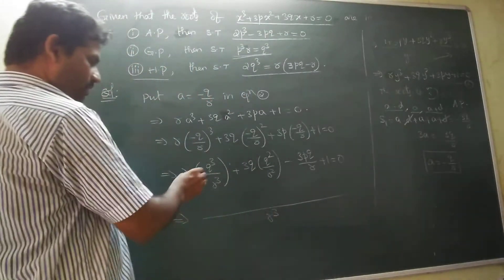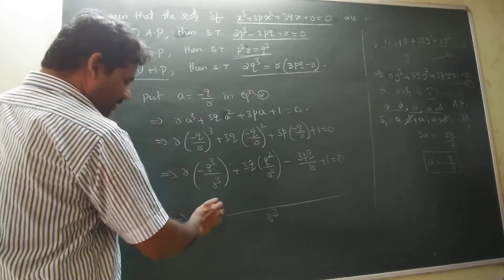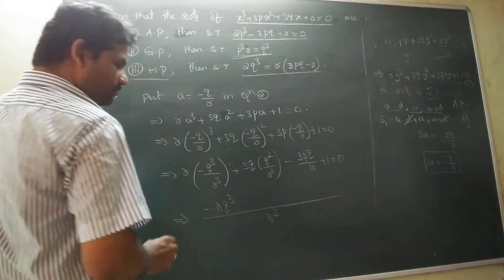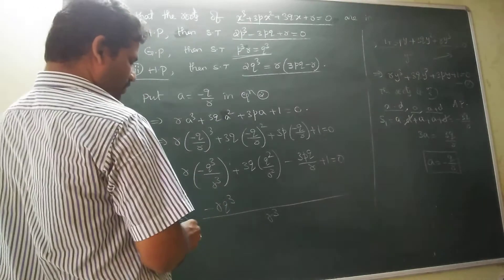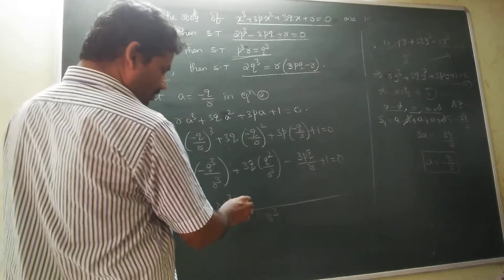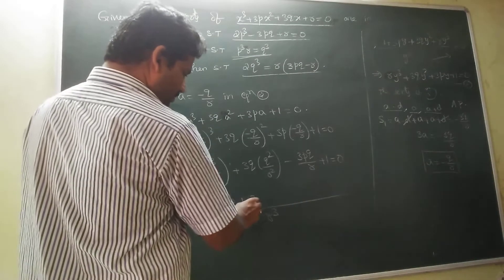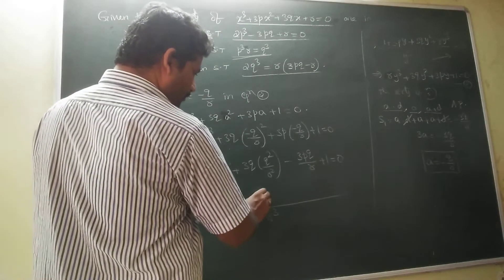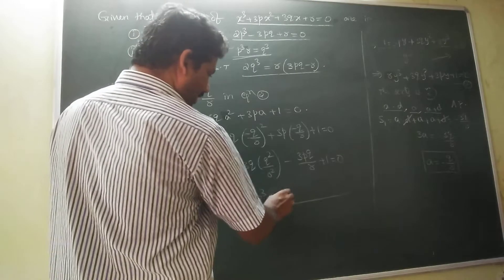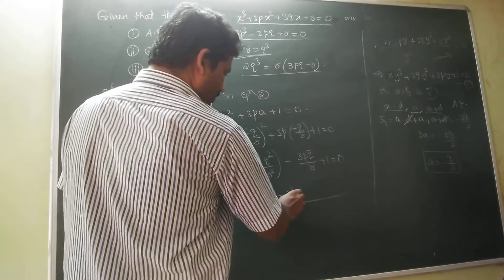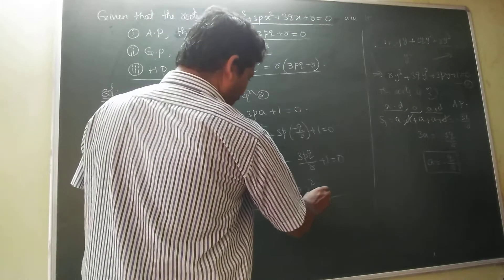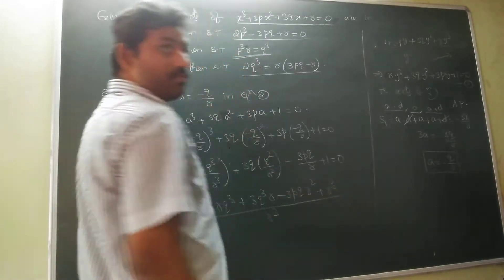Expanding: minus Q³/R² plus 3Q³/R² minus 3PQ/R plus 1 equal to 0. Multiplying through by R²: minus Q³ plus 3Q³ minus 3PQR plus R² equal to 0.